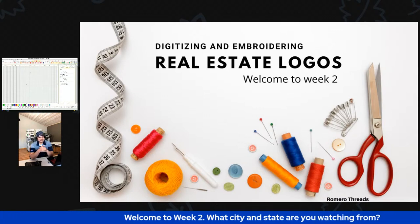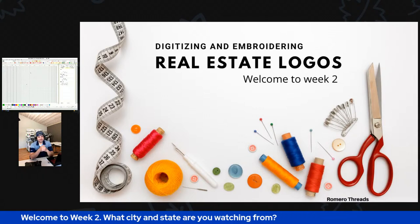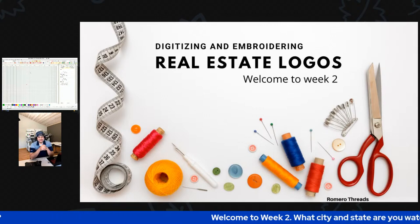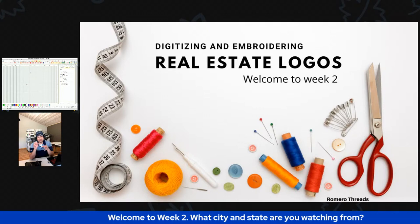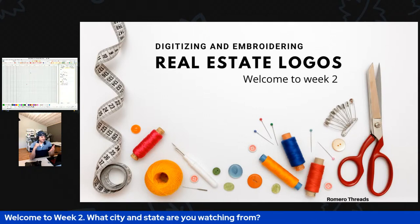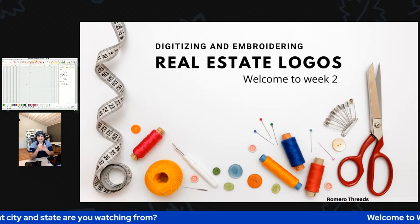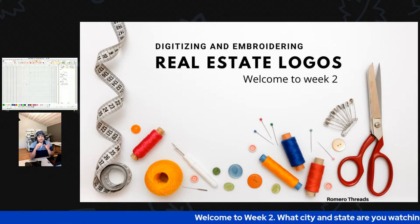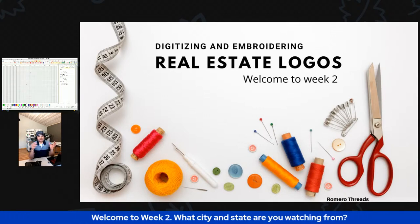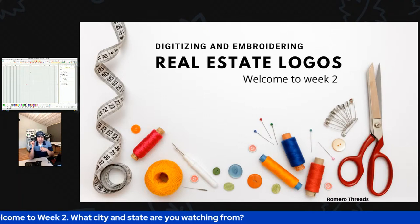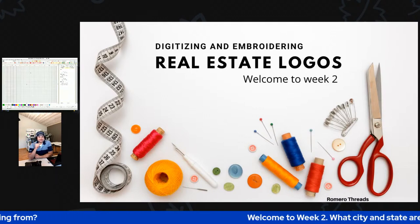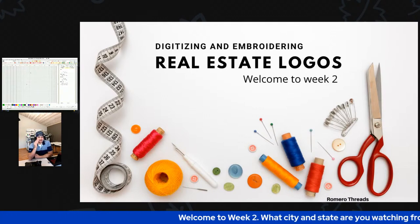We're going to not only talk about real estate logos but actually digitize, hoop, and embroider some of the more common ones. I call that the embroidery triangle — digitizing, hooping, and the actual embroidery — because one without the other doesn't happen. In order to have a successful stitch out, we have to be good from beginning to end.